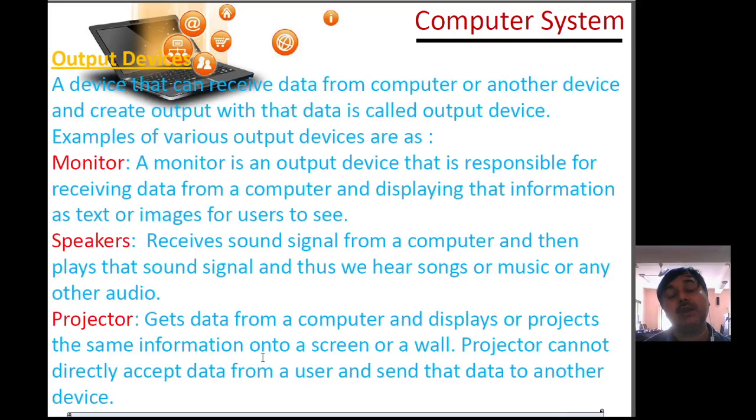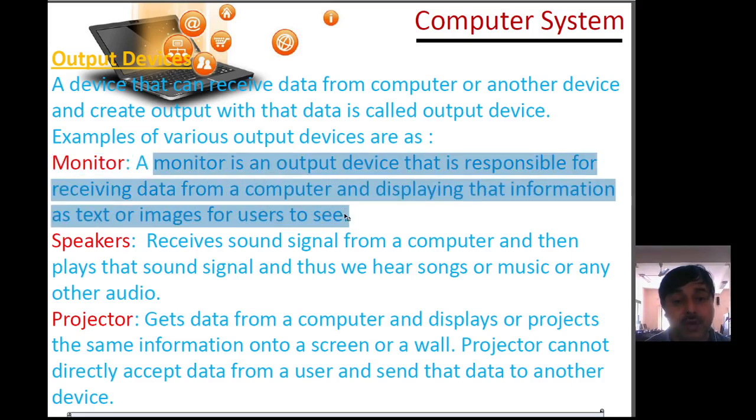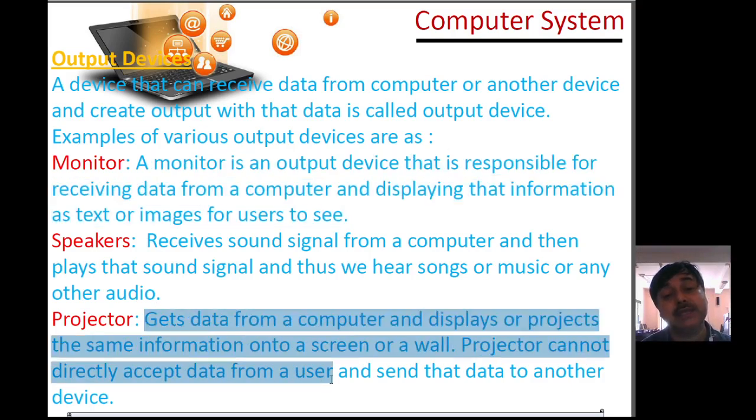Output devices: through which output is given to us. First and foremost is the monitor. Different types of monitors are there. Next is the speaker, which gives output. And projector, which we use to show and explain things.